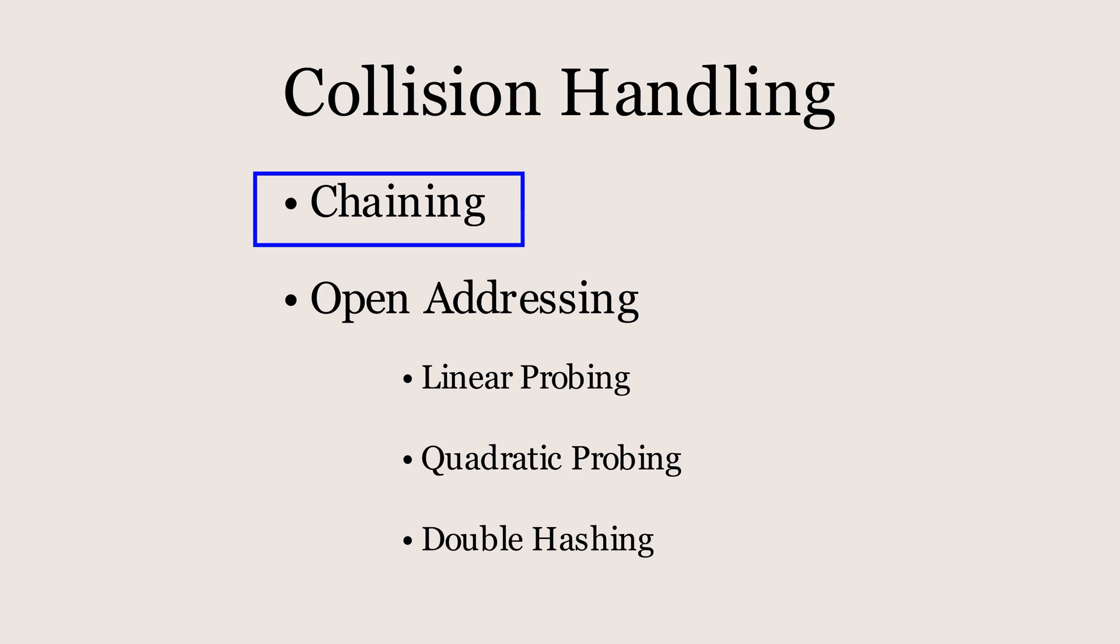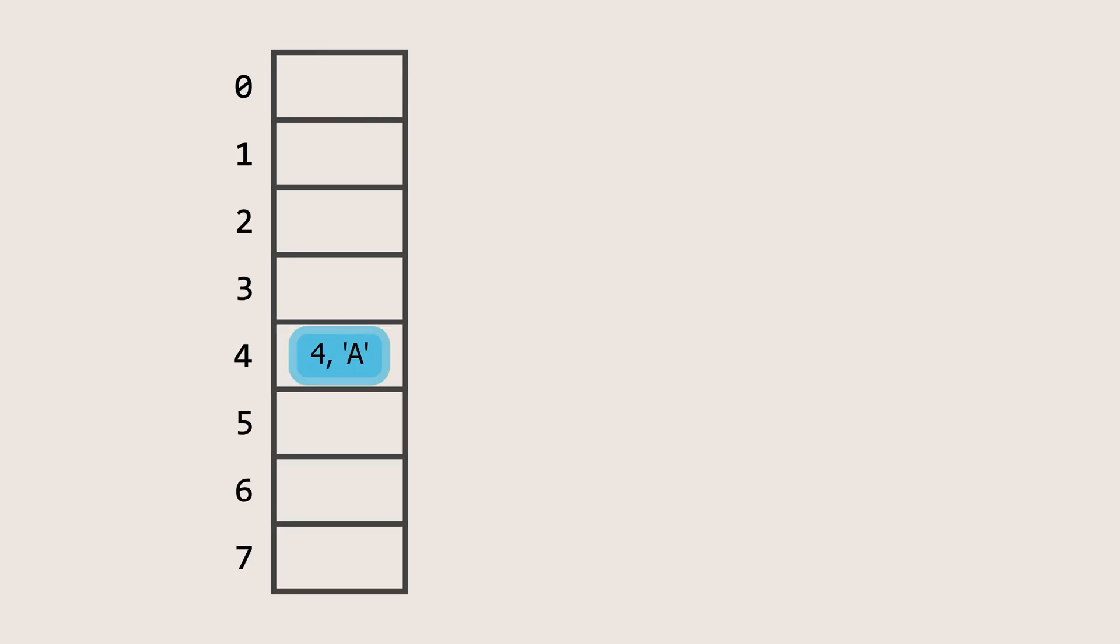Now, let's look at another collision handling technique called open addressing. In this method, we'll first explore a strategy known as linear probing. In linear probing, when a collision occurs, we try to find the next available slot to insert the element. For example, if index 4 is already filled, we move to the next index, 5. Since index 5 is empty, we insert the element there.